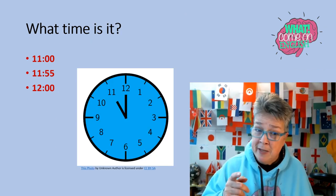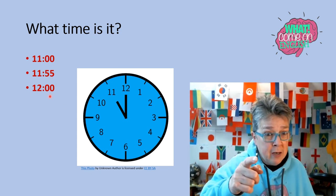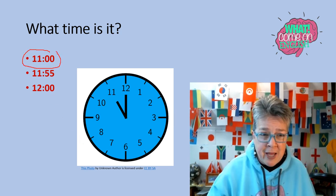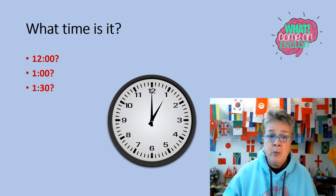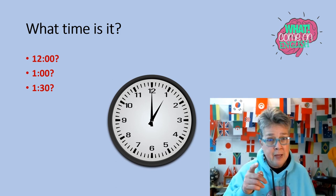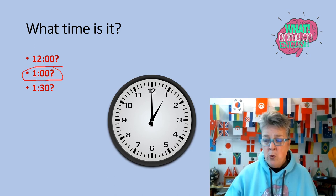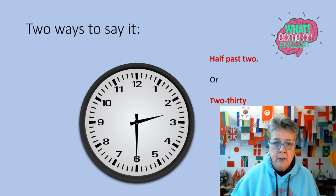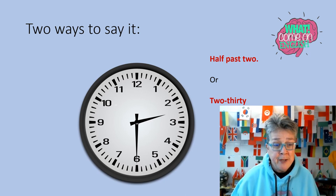What time is it? Is it eleven o'clock, eleven fifty-five, or twelve? Think about it — say it. Did you say twelve? Nope — you said eleven. You are correct, it's eleven o'clock. What time is it? Is it twelve, is it one, or is it one thirty? Say it loud, say it proud. Did you say one o'clock? You're doing great. Two ways to say it: half past two or two thirty. What about the quarter hours?